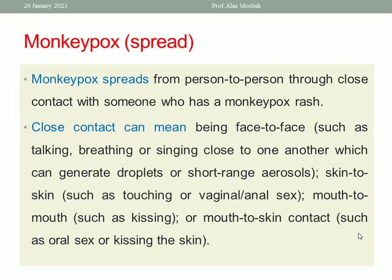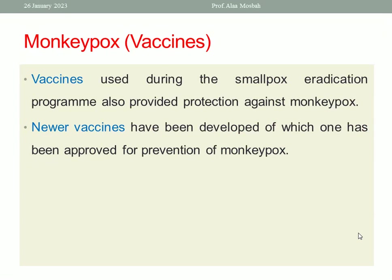Monkeypox spreads from person to person through close contact, meaning face-to-face such as talking, breathing, or singing close to one another — which can generate droplets or short-range aerosols — skin-to-skin such as touching or vaginal or anal sex, mouth-to-mouth such as kissing, or mouth-to-skin contacts such as oral sex or kissing the skin. Regarding vaccine: the vaccine used during the smallpox eradication program also provided protection against monkeypox, and a newer vaccine has been developed and approved for prevention of monkeypox.